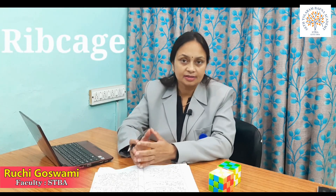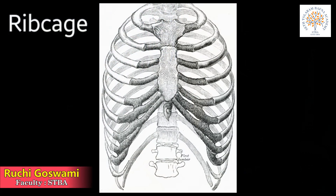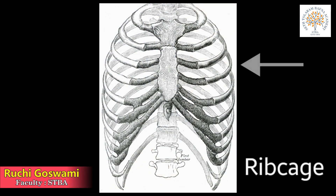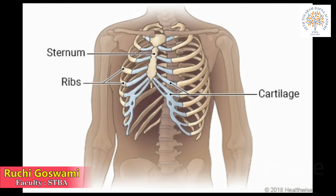After the skull, let's move to the rib cage, which protects our heart. You know, students, the heart is the most sensitive organ in our body. The ribs are thin and curved bones that form a cage in the chest called the rib cage. The rib cage protects our heart and lungs. Most people have 12 pairs of ribs.